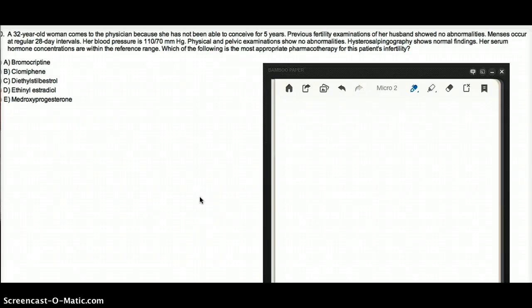This question deals with a 32-year-old woman who comes to the physician because she has not been able to conceive for five years. Previous fertility exam of her husband shows no abnormalities. Menses occur at regular 28-day intervals.